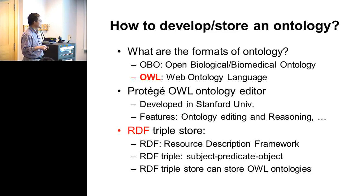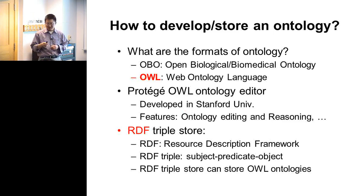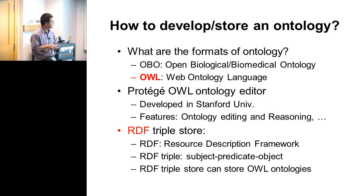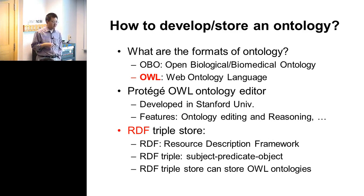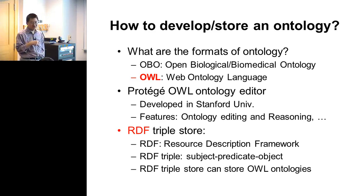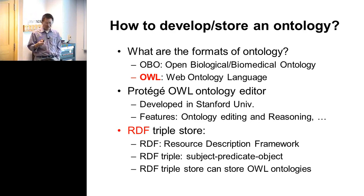How to develop an ontology: gene ontology uses the OBO format, which is very simple — no background needed. OWL is the more advanced one with more features, but requires some background. OWL means Web Ontology Language. The editor is called Protege, developed at Stanford by Dr. Mark Musen's lab. You can use it for ontology editing, reasoning, Sparql queries, and many other plug-in features.